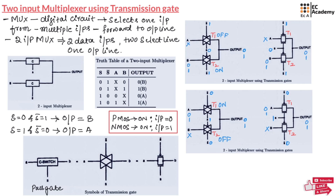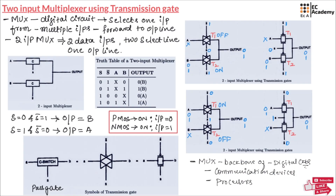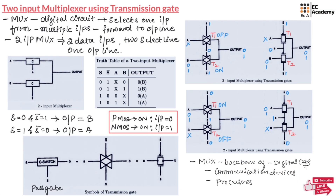These multiplexers are the backbone of many digital electronic circuits. They are useful in communication devices and also in processors. This is about the two input multiplexer using transmission gate. We have covered the basics, truth table, and how the circuit operates step by step. Hope you have understood the topic. Thank you.